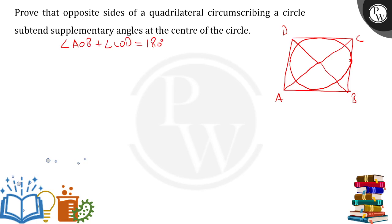Now for proving this, we have to do some construction. We have to join with the center the points where the touching of the circle is happening — from the center O, touch all the points where the circle meets the sides — and give them names P, Q, R, S.